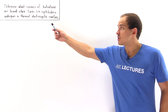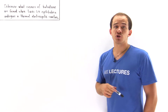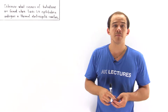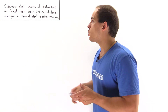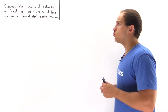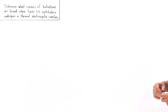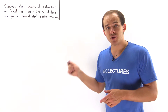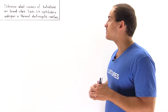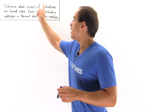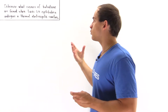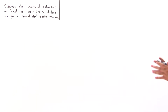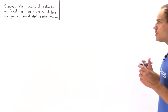Now that we discussed thermal electrocyclic reactions, let's take a look at the following example. Determine what isomers of butadiene are formed when trans-3,4-cyclobutene is transformed via a thermal electrocyclic reaction into 1,3-butadiene. So what are the isomers?